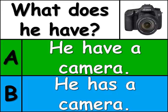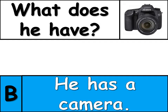Here's question number six. What does he have? Is the right answer A or B? The answer is B. He has a camera. Remember, for he, she, and it, we use 'has.' For I, you, we, and they, we use 'have.'